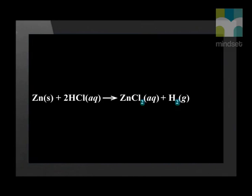Our final step is to balance the reaction and to add in the phase indicators. We have two chloride ions and two hydrogen ions on the right-hand side. So, to balance this, we put a two in front of the hydrogen chloride on the left-hand side.